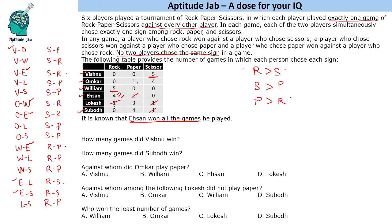Now we mark the winners of each of the 15 games. Scissors vs rock — rock wins. Scissors vs paper — scissors wins. Scissors vs paper — scissors wins. Scissors vs rock — rock wins. Rock wins. Scissors vs paper — scissors wins. Scissors vs paper — scissors wins. Then rock vs paper — paper wins. Rock vs paper — paper wins. And the last game, rock vs paper — paper wins.